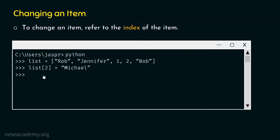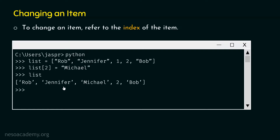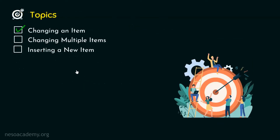Let's hit enter and check whether our list is updated. We will type list and hit enter. We will get Rob, Jennifer, Michael, 2, and Bob as the result. We can easily observe that the item at index 2 has been replaced by the string Michael. I hope it is clear how to change an item of a list. Now let's move on to the next topic: changing multiple items.